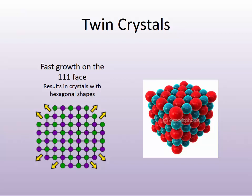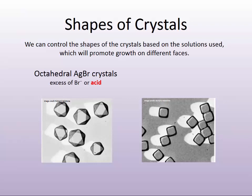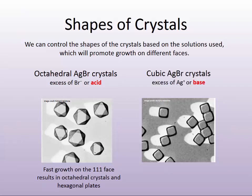Plates and twins occur when one face grows preferentially faster than all the others. The 111 face is the most sensitive to differences in silver or halide concentration because these are faces which are pure in one of the ions. If I have an acid-based emulsion, I'm going to get accelerated growth of the 111 face. If I have a highly basic ammonia emulsion, then I'm going to get very accelerated rate of growth along the 111. So there's a real balance — I can dial or tweak between the two to get the different crystal shapes that I want.